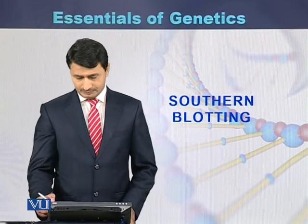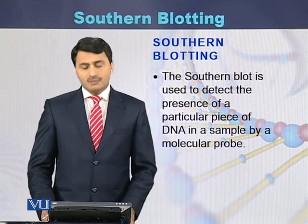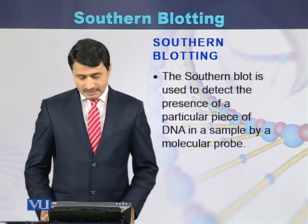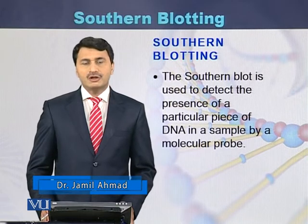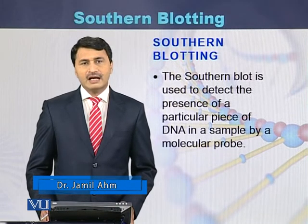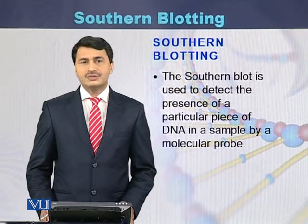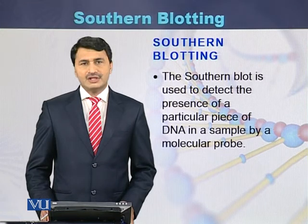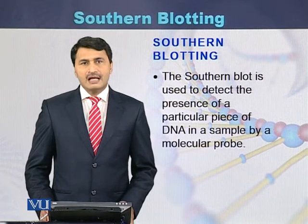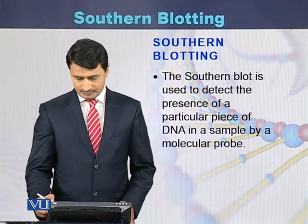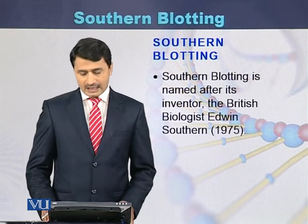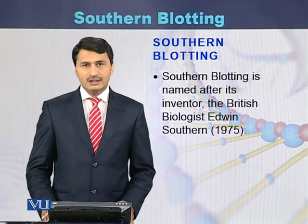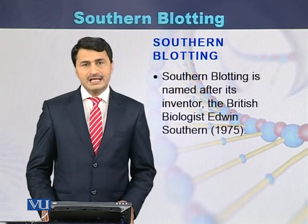Southern blotting is used to detect the presence of a particular sequence of DNA by using a molecular probe. This is a technique for identification of a small piece of DNA or for the identification of a particular mutation by using a probe. This technique is named after its inventor, the British biologist Edwin Southern, who identified this technique in 1975.